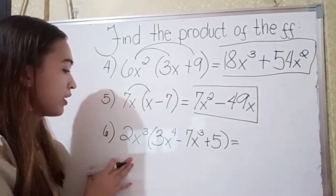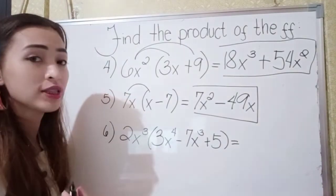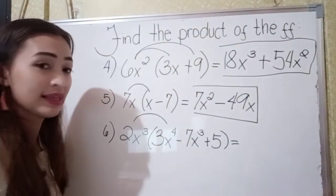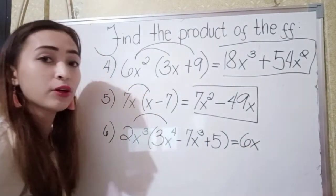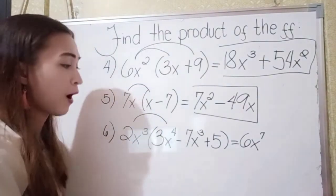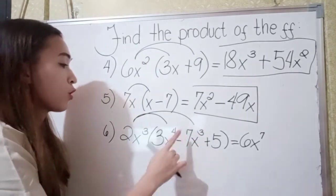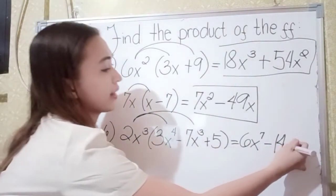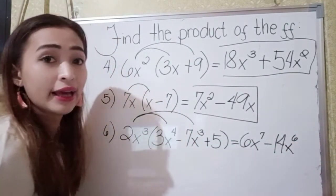For number 6, we have 2x cubed times 3x to the 4th power minus 7x cubed plus 5. Using the distributive property: 2x cubed times 3x to the 4th — 2 times 3 is 6, and we add the exponents 3 plus 4 to get 7 — giving us 6x to the 7th power. Next, 2x cubed times negative 7x cubed: 7 times 2 is 14, this is negative so negative 14, and 3 plus 3 is 6, giving us negative 14x to the 6th power.